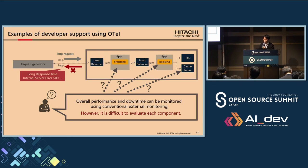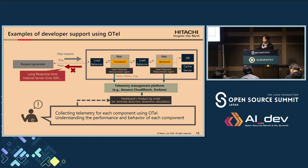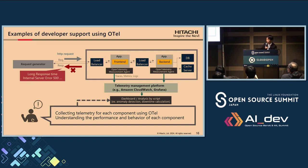However, what developers really want to know is which component needs improvement. In distributed systems, it is difficult to assess the behavior of individual components by external monitoring alone. Therefore, we will consider a method for understanding component behavior using tests with OpenTelemetry. We integrate the OTEL agent into the target component for testing and collect telemetry during request sending. By analyzing the collected metrics and traces, we can gain insight into the performance and behavior of each component.